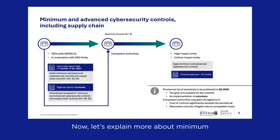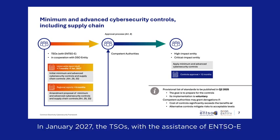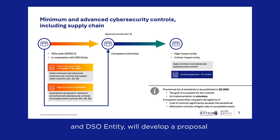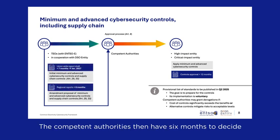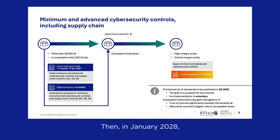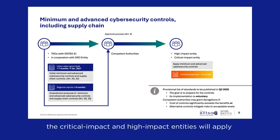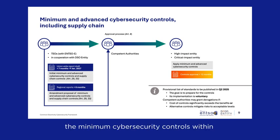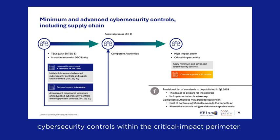In January 2027, the TSOs, with the assistance of ENTSO-E and DSO Entity, will develop a proposal for minimum and advanced cybersecurity controls. The competent authorities then have six months to decide the minimum and advanced cybersecurity controls based on the proposal. Then, in January 2028, the critical-impact and high-impact entities will apply the minimum cybersecurity controls within the high-impact perimeter and advanced cybersecurity controls within the critical-impact perimeter.